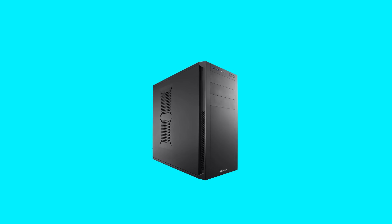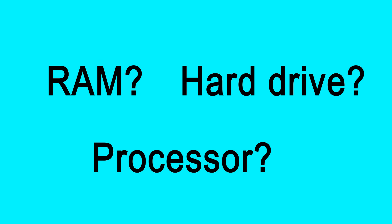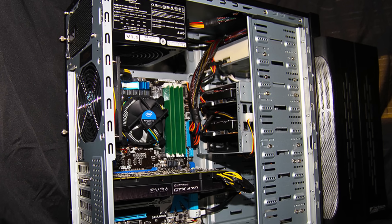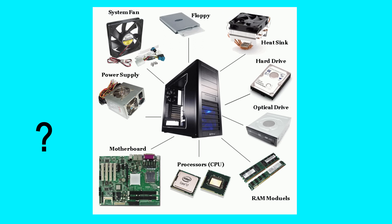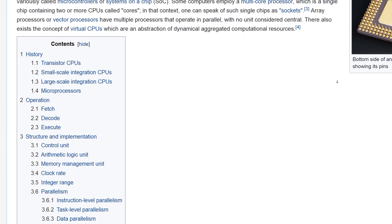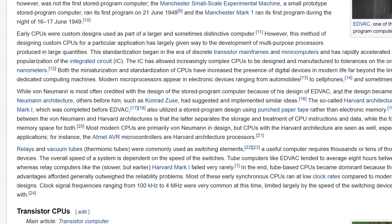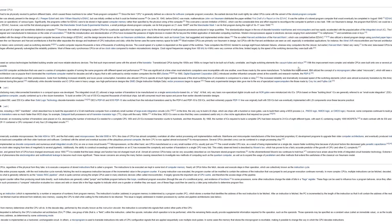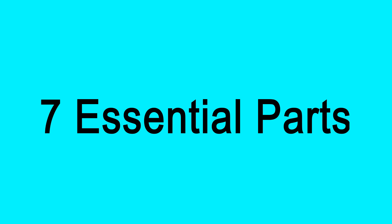If you work with computers, you've likely heard terms like RAM, hard drive, and processor mentioned by tech support or others who are more interested in what goes on inside of a computer's case. If you've always wondered what the various components of your computer are for, but have never really had the time to look into it, then this video is just for you. A typical desktop computer comes down to these seven essential parts.